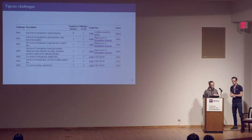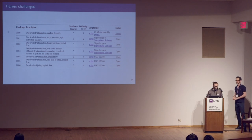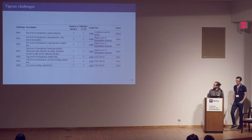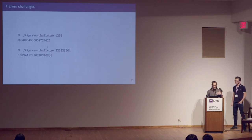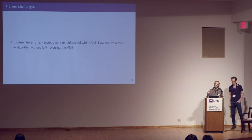Tigress is a binary protection, and the Tigress team has provided challenges with different levels of difficulty. VM0, the first level, contains only one level of virtualization, but VM4 uses two-level virtualization. The challenge is: you give an input number, and the challenge returns a hash. The problem is how can we recover the hash computation algorithm, which has been obfuscated, without reversing the virtual machine.